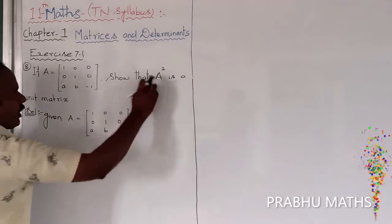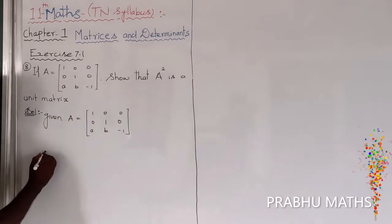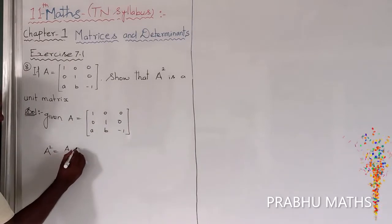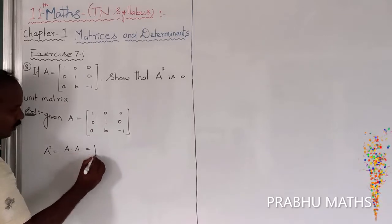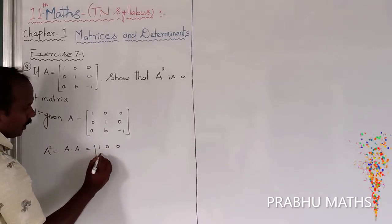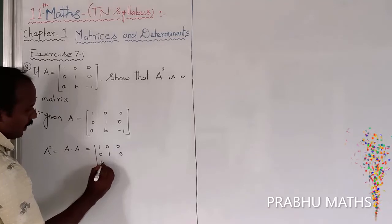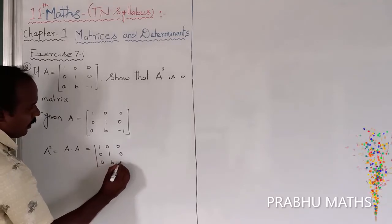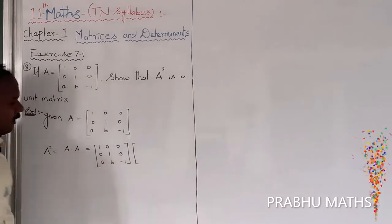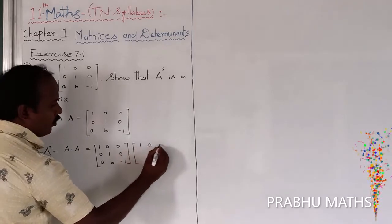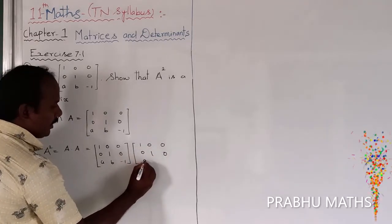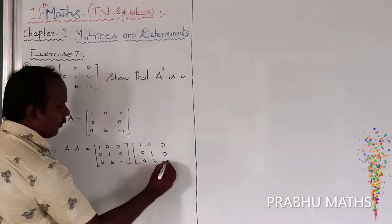To find A squared. A squared is equal to A into A. That is A multiplied by A, where A is the matrix 1, 0, 0; 0, 1, 0; A, B, minus 1 — multiplied by itself: 1, 0, 0; 0, 1, 0; A, B, minus 1.